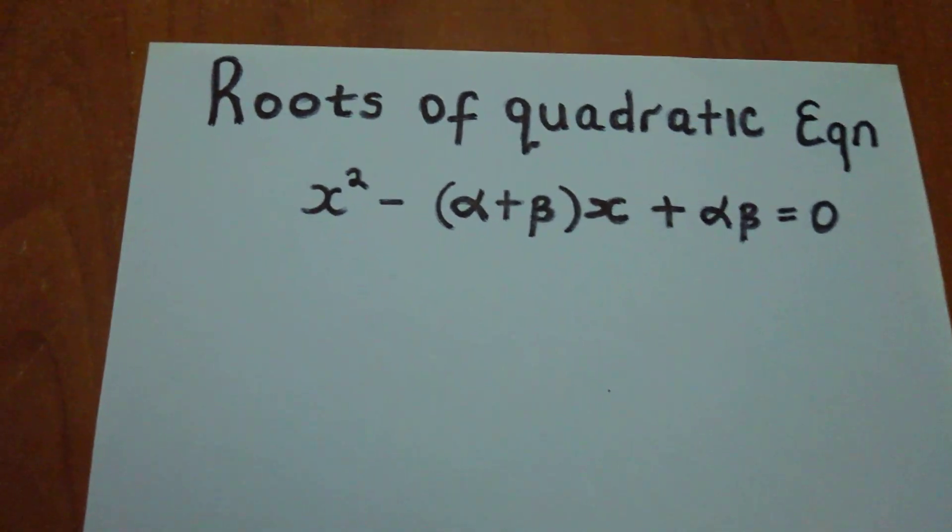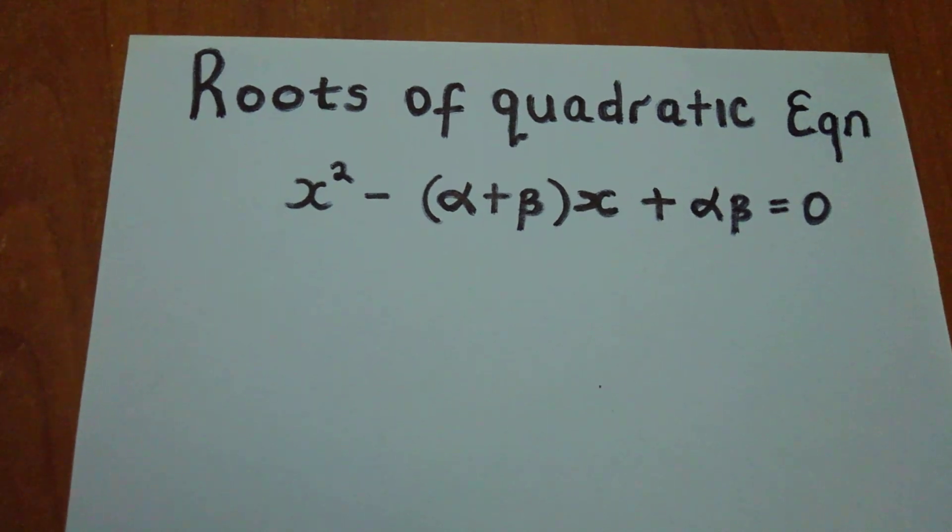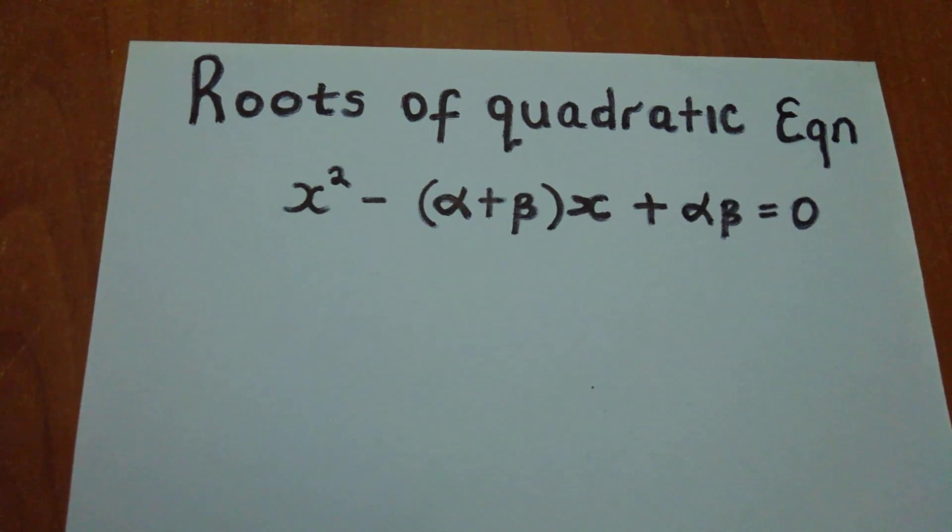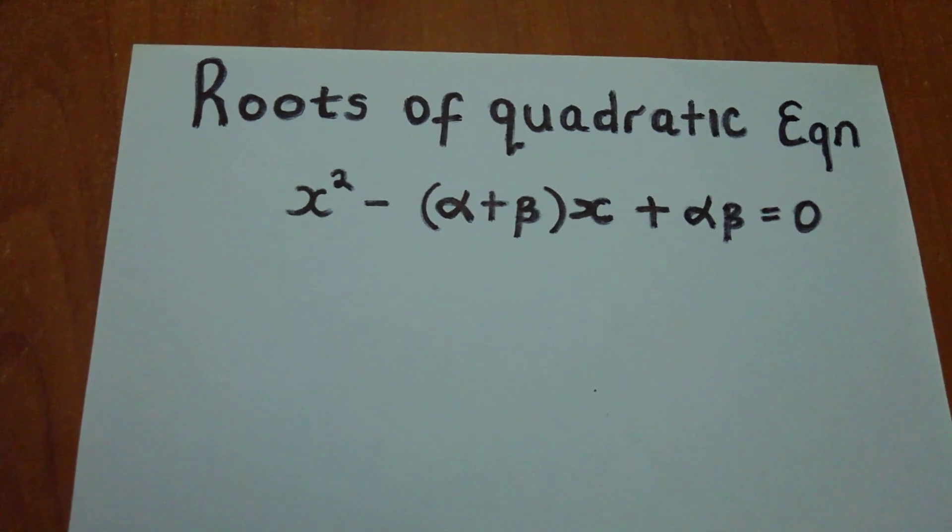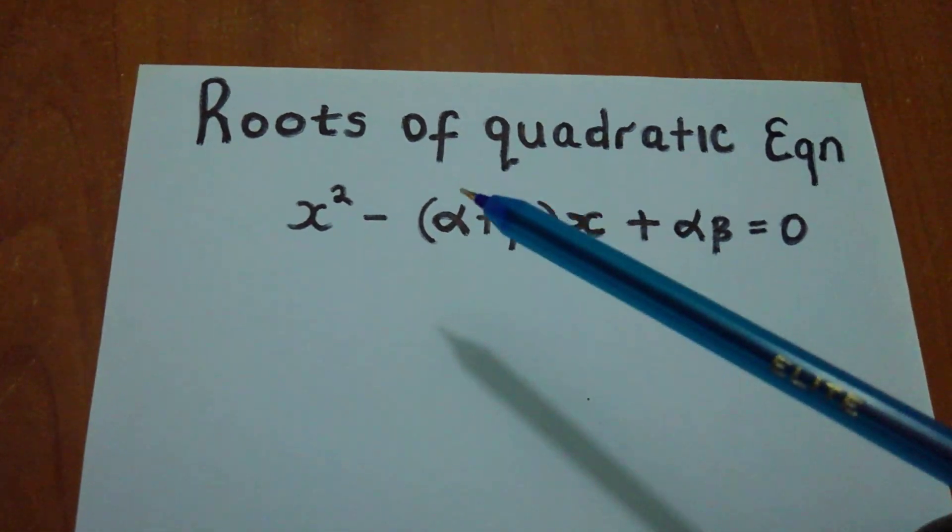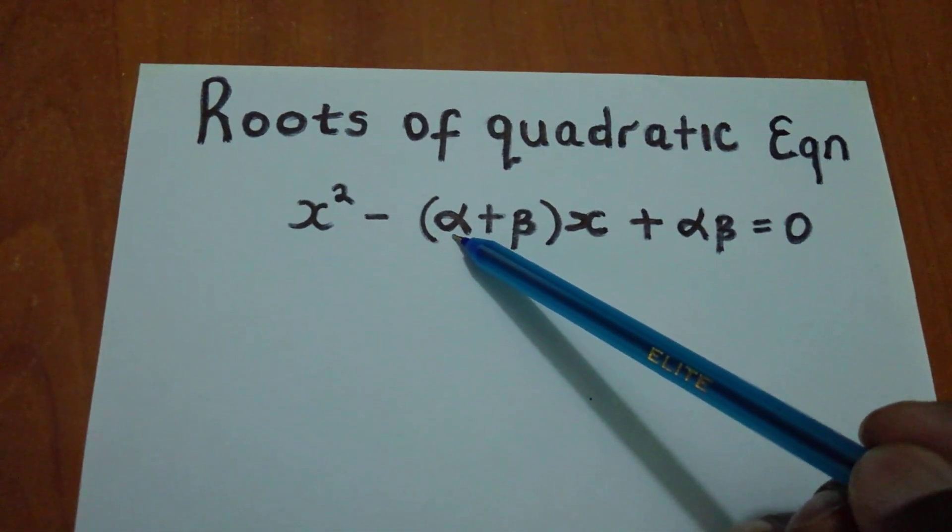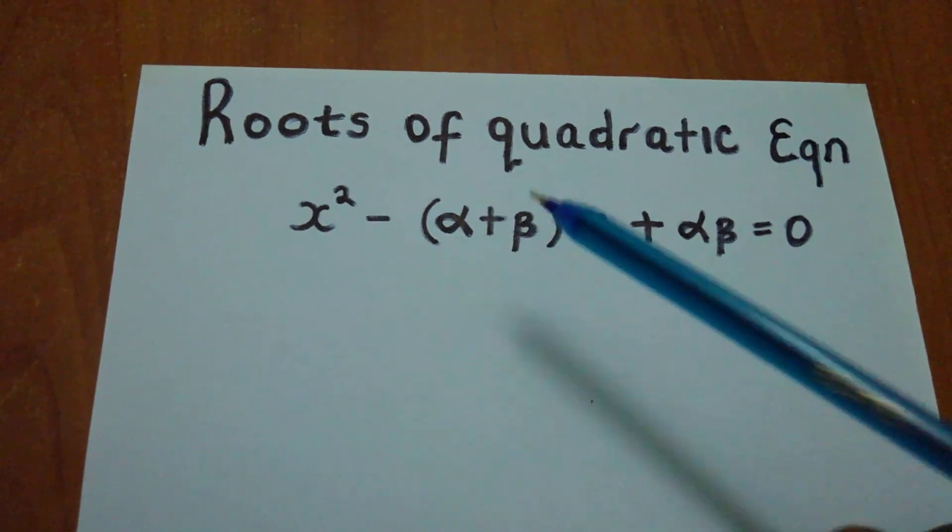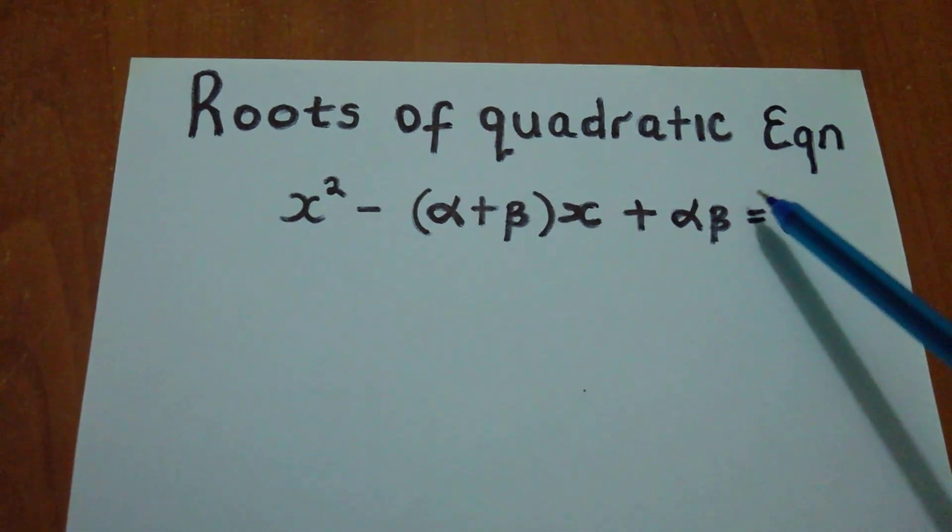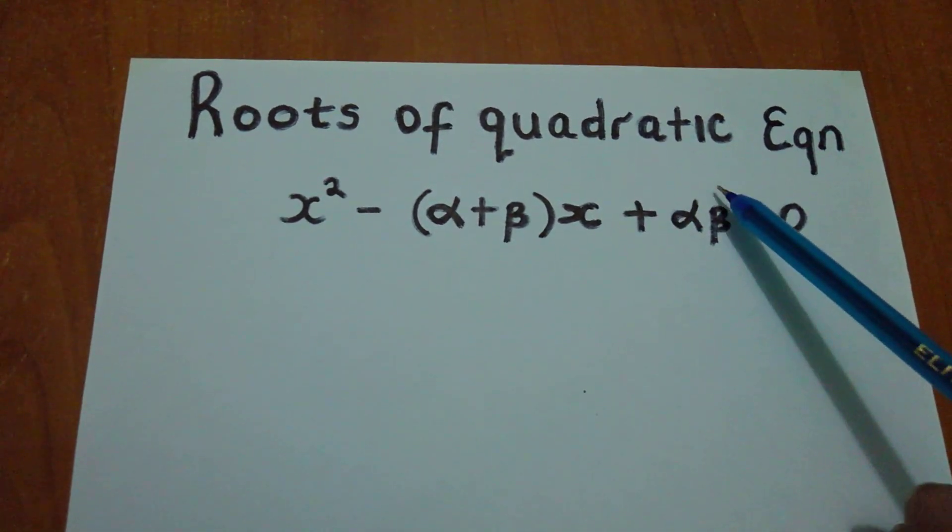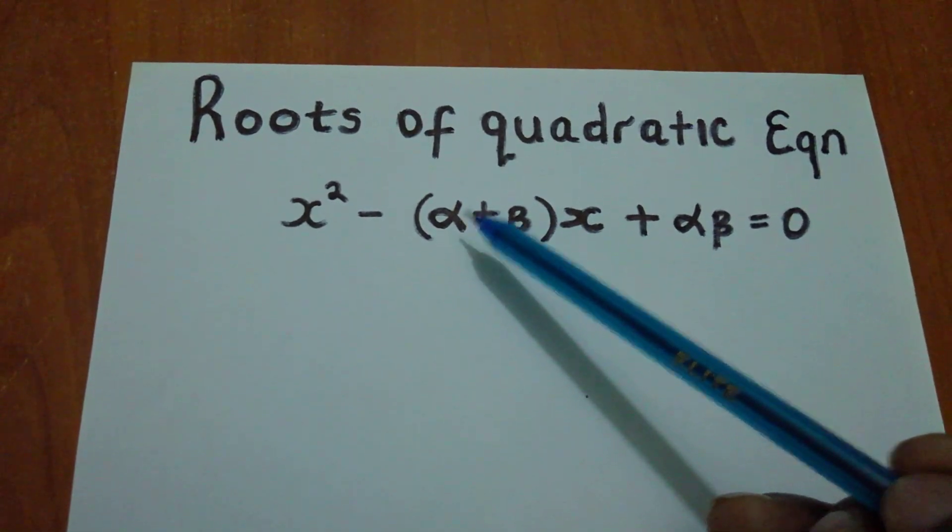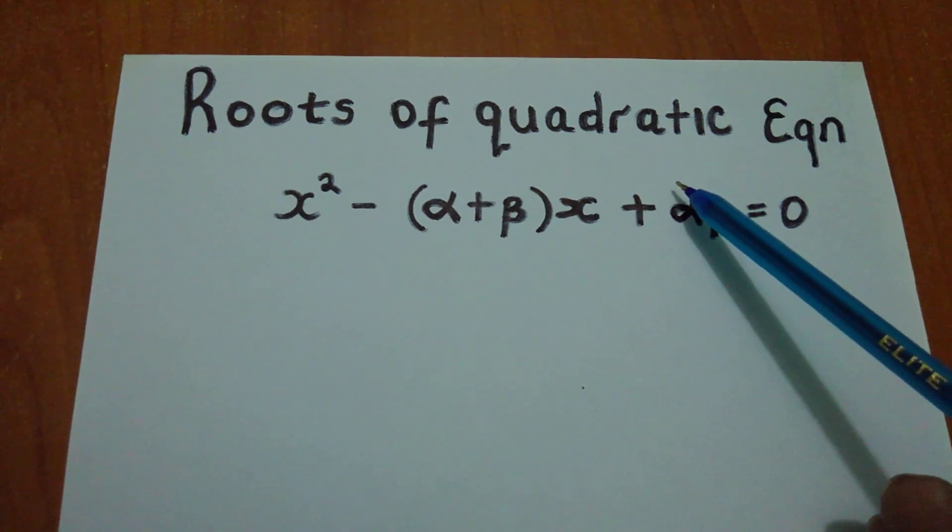We have such an expression which says x squared minus alpha plus beta in brackets x plus alpha beta. Now in here, we have the roots as alpha and beta. The whole of this section is called sum of the products. This one is called the sum of roots, and this one is called the product of roots.